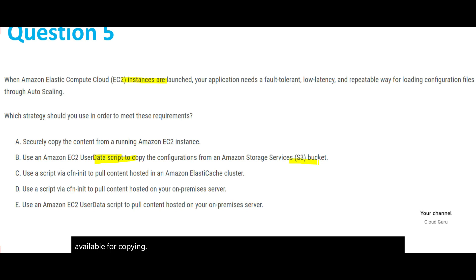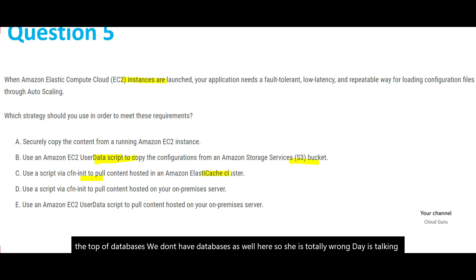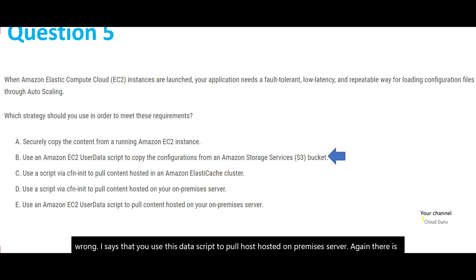Option C says to use a script via cfn-init to pull content hosted in an ElastiCache cluster — we are not using ElastiCache here, and the question doesn't mention it. ElastiCache is used for caching on top of databases, which we don't have here, so C is totally wrong. Option D talks about pulling content from your on-premises server — there is no on-premises server mentioned in the question. Option E also mentions pulling content from an on-premises server, which is again not applicable. Hence our final answer is option B — the user data script pulling content from S3.